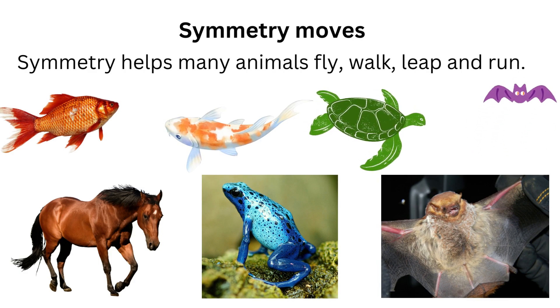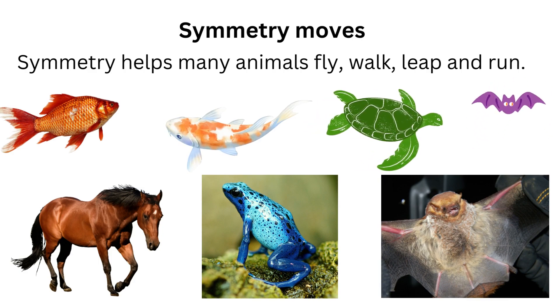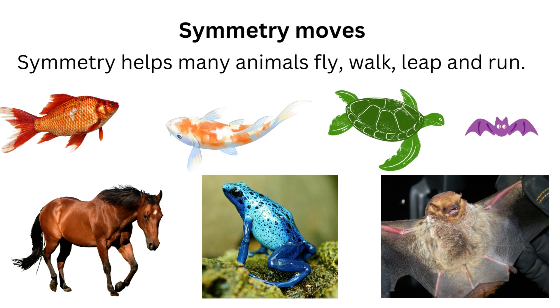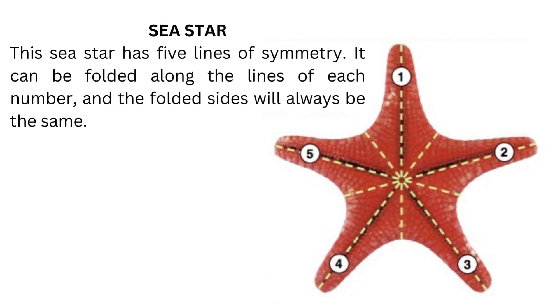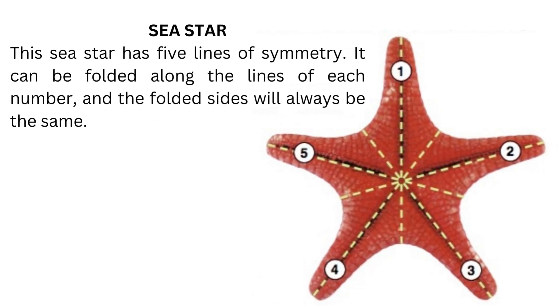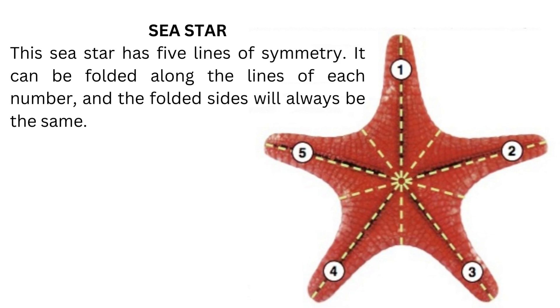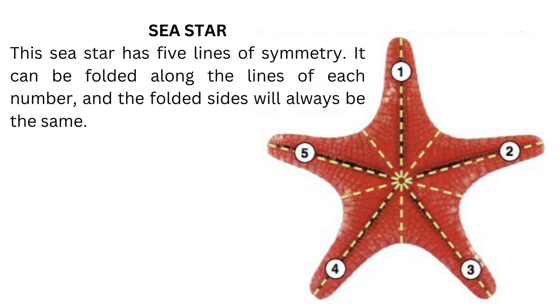Symmetry helps many animals fly, walk, leap, and run. Many things in nature have five or more equal parts, and you can draw five or more lines of symmetry on them. You can spin them around too, and the symmetry will not change. For example, this sea star has five lines of symmetry — it can be folded along the lines of each arm, and the folded sides will always be the same.